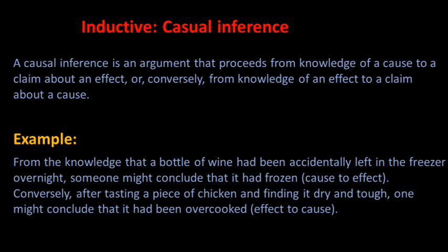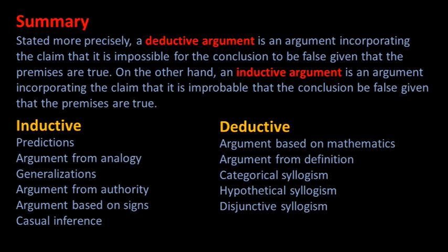Let us now summarize everything we have learned in this video. Deductive arguments are those that rest on necessary reasoning, while inductive arguments rest on probabilistic reasoning. A deductive argument incorporates the claim that it is impossible for the conclusion to be false given that the premises are true; an inductive argument incorporates the claim that it is improbable that the conclusion be false given the premises are true. Common inductive arguments are predictions about the future, arguments from analogy, inductive generalizations, arguments from authority, arguments based on signs, and causal inferences. Common deductive arguments are arguments based on mathematics, arguments from definition, and categorical, hypothetical, and disjunctive syllogisms.